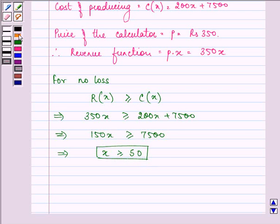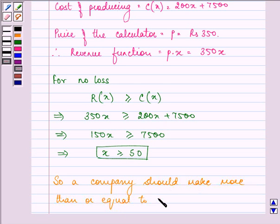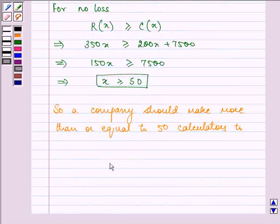So a company should make more than or equal to 50 calculators to ensure no loss. That is, it may be 51 calculators, 52 calculators and so on. So this completes the first part of the question.